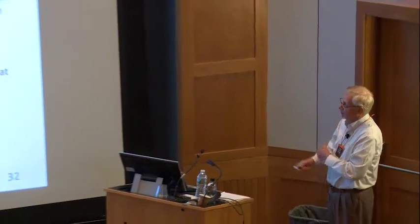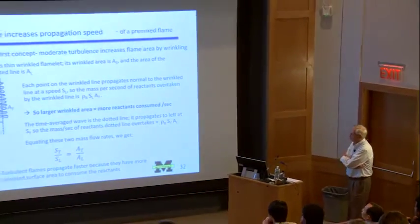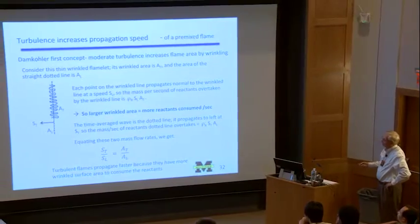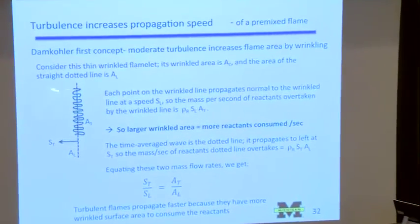Damköhler said a couple of things many years ago. First, if you just have a small amount of turbulence, you can imagine a turbulent flame to be a laminar flame with a larger surface area. Each segment of this wrinkled flame is acting like a laminar flame, propagating against the reactants and consuming them. The more area, the more consumption. So you get a larger propagation speed S_T if the flame has more area.